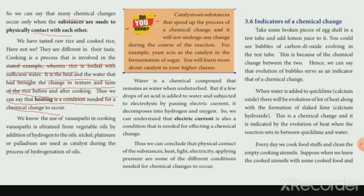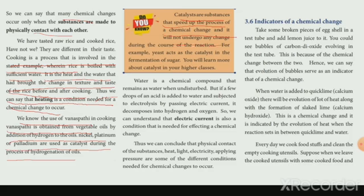Vanaspati is a cooking fat obtained from vegetable oil by adding hydrogen to the oil. Nickel, platinum, and palladium are used as catalysts during the process of hydrogenation of oil. A catalyst is a substance that speeds up a chemical reaction without itself undergoing any change during the course of the reaction. For example, yeast acts as a catalyst in the fermentation of sugar.